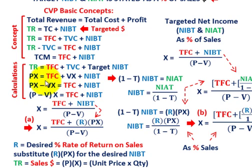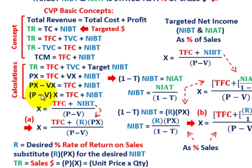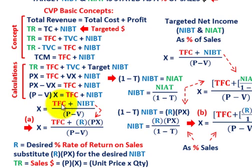We can factor out X from the left side. The difference between unit price and unit variable cost times X equals total fixed cost plus net income before taxes. Solving for X by dividing both sides by (P minus V): X = (TFC + NIBT) / (P - V). That solves for X based on net income before taxes.